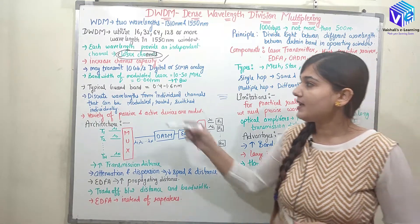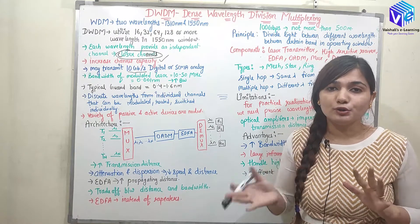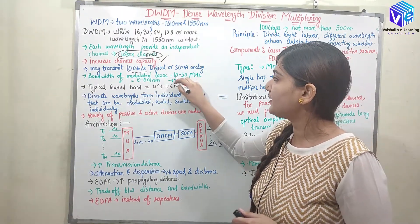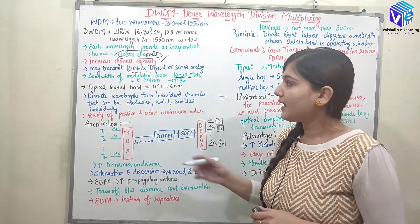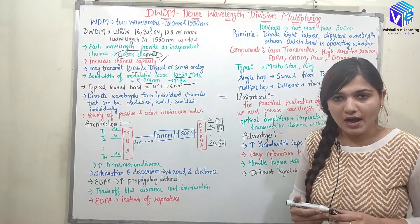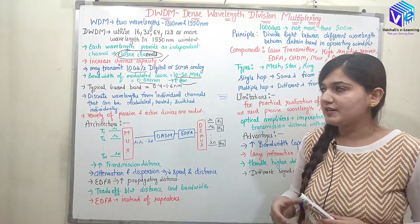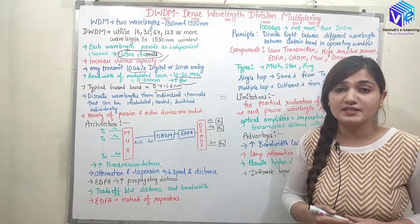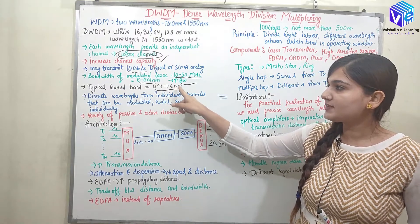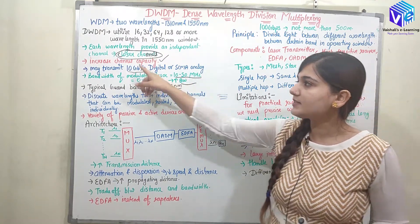The data rate would also be high — it may transmit 10 GB per second digital signals or analog signals as well, so we can send both kinds of signals. The format of the signal doesn't matter. The bandwidth of the modulator laser is around 10 to 50 megahertz, or about 0.001 nanometer. With higher bandwidth, we get higher speed, so with DWDM we get higher-speed communication. The guard band is 0.4 to 1.6 nanometer. These are the key mathematical parameters: guard band 0.4 to 1.6 nanometer, bandwidth 0.001 nanometer, any signal format supported, and higher channel capacity.